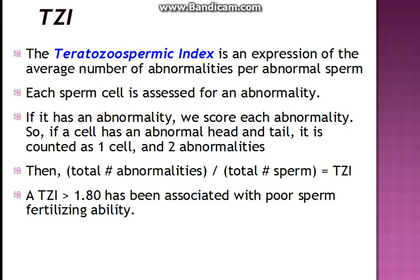By looking at the abnormalities, we calculate an index known as the Teratozoospermic Index (TZI), which gives the average number of abnormalities present per sperm. Each sperm is assessed and each abnormality is scored — so if a sperm has an abnormal head and an abnormal tail, it scores 2 abnormalities for 1 cell. After counting around 200 cells, if the TZI is more than 1.8, it indicates poor sperm fertilizing ability.